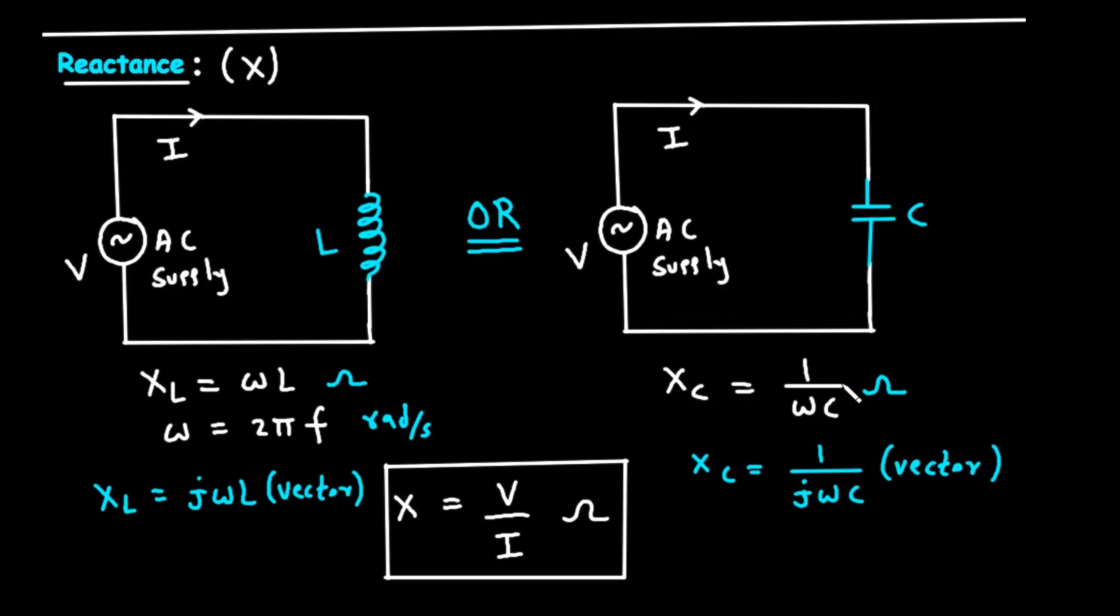The formula for capacitive reactance is X sub C equals 1 divided by the product of omega and C. Here, C is the capacitance, measured in farads, and omega is the same angular frequency we saw before.